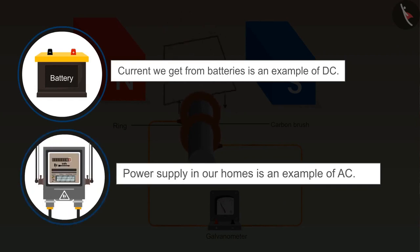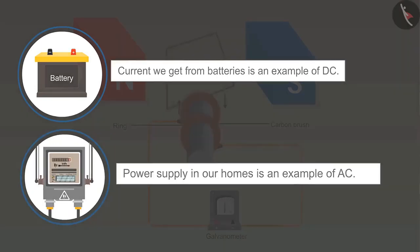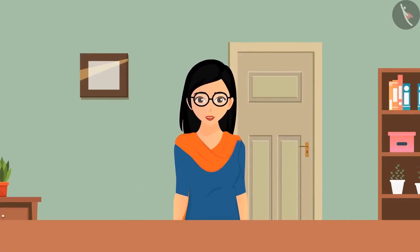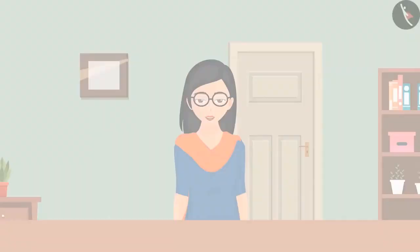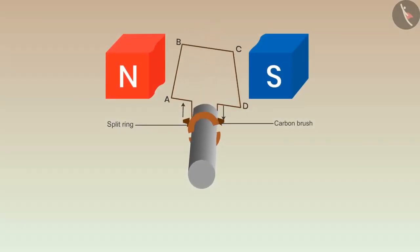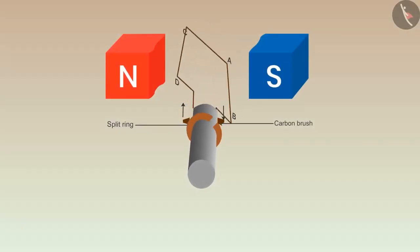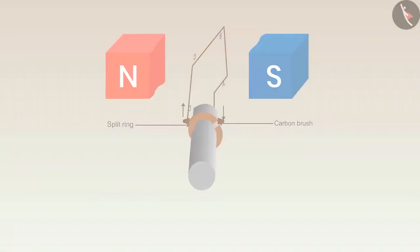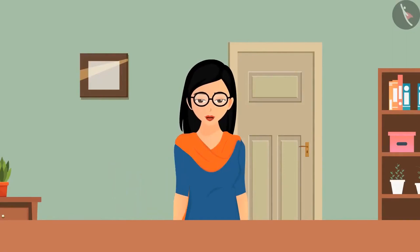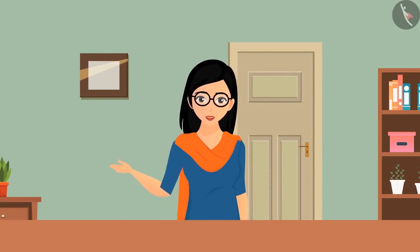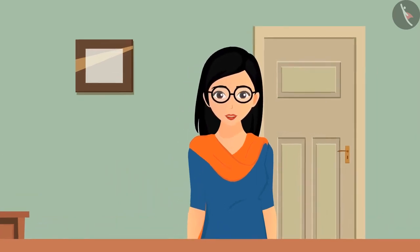The power supply in our homes is an example of AC. For a DC generator, if we put the split ring back in place of the two complete rings, we get a DC current — these generators are known as DC generators. DC generators are commonly used as alternators in automobiles to charge up batteries. We started our journey with a simple magnet, and see where we are now — we understand how one can generate electricity. There is no limit in science; the deeper you dive, the more you understand.